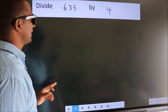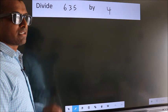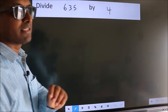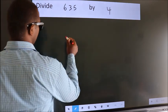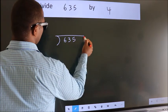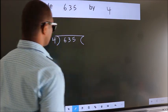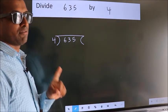Divide 635 by 4. To do this division, we should frame it in this way. 635 here, 4 here. This is your step 1.